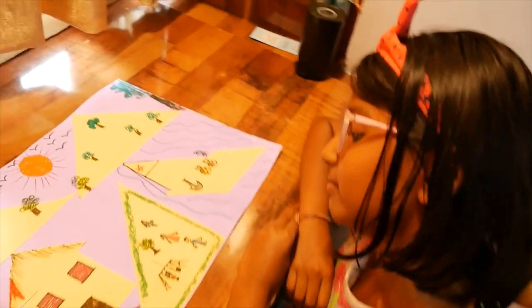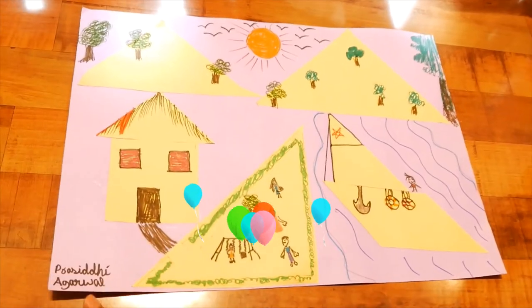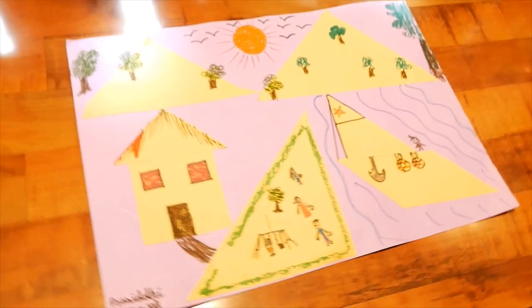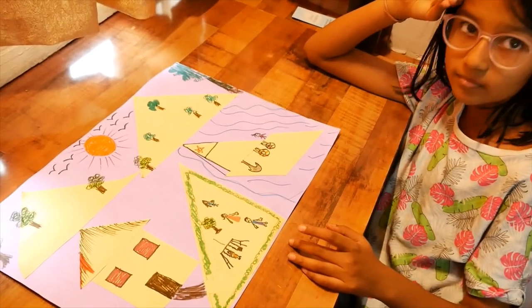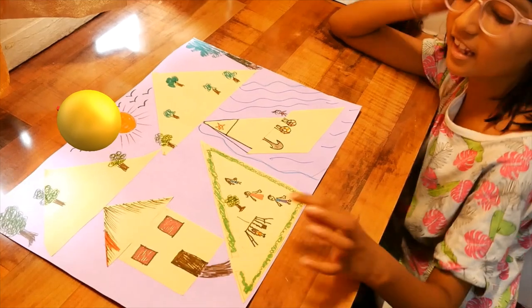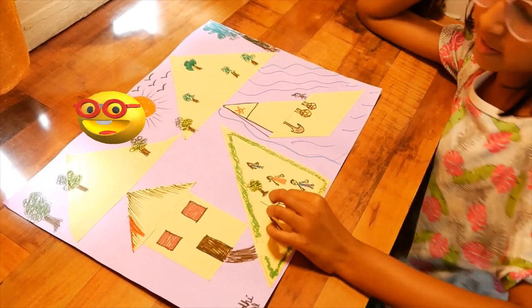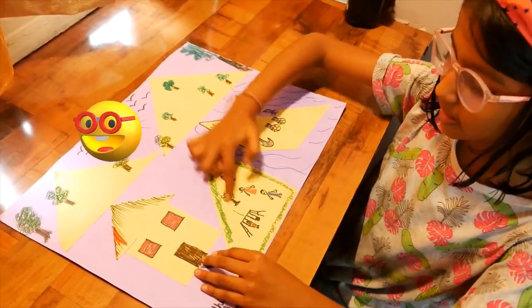So Prasidi, have you completed your tangrams landscape? Yes. Good, good. You have made it nicely. Very nice. This is the house. Yeah. This is the park. Yes.